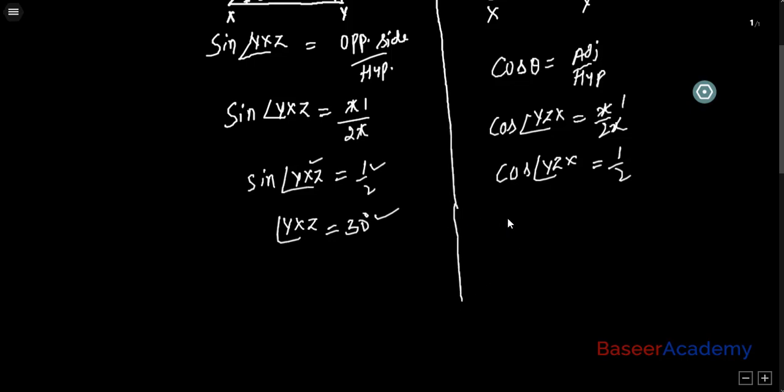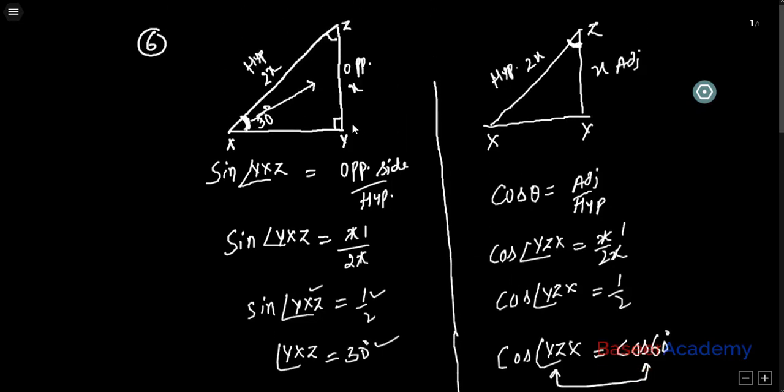For more clarity, I'll write: cos of angle YZX equals half. I'll write in place of half, cos 60 degrees, because cos 60 degrees is half. Now left-hand side and right-hand side have the same trigonometric ratios. You can equate the angles. The angle YZX equals 60 degrees.